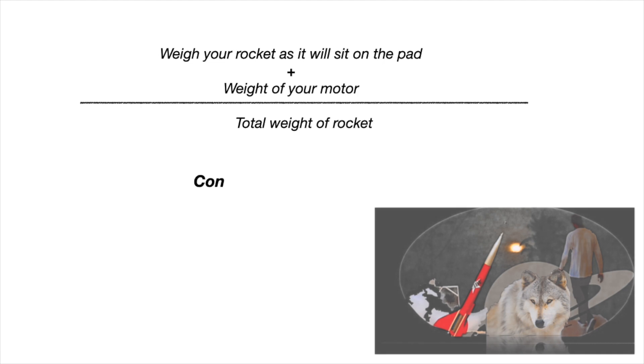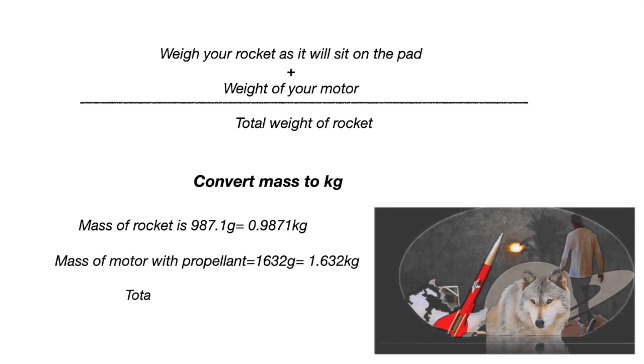My solid rocket motor when loaded weighed 1632 grams of propellant, so I am assuming my minimum thrust of 200 newtons. Now to find its exit velocity, you have to weigh the rocket with the motor divided by the total weight. I obtained a total mass of 2619 grams, converting it into kilograms, I got 2.6 kilograms.